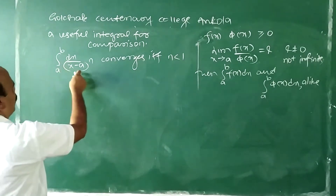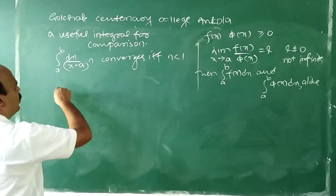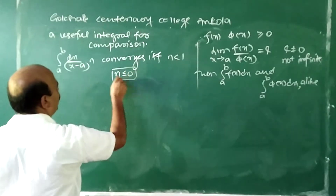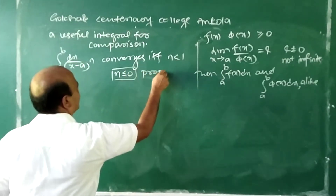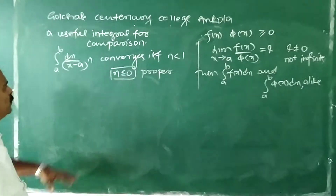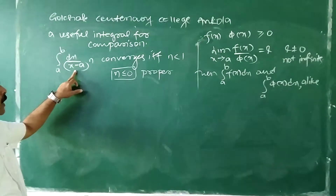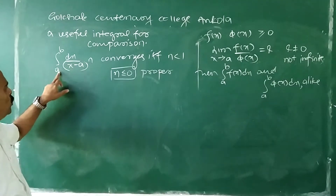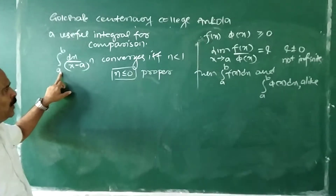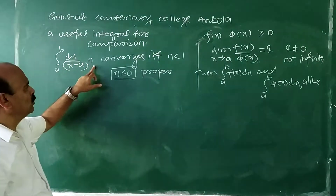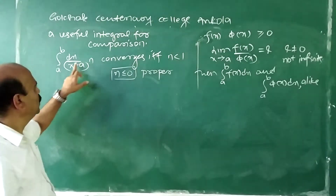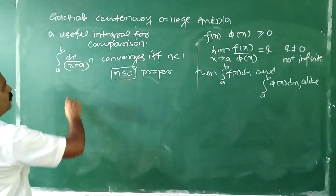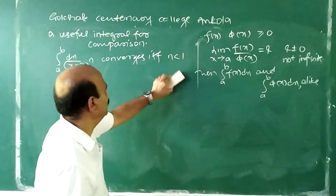Why is it improper? It is improper because when N is greater than 0, the function is unbounded at x = A. When N is less than or equal to 0, it becomes proper — because when N equals 0 the integrand becomes 1, and when N is negative it goes to the numerator, so A is not a point of discontinuity. When N is positive and greater than 0, A becomes the point of discontinuity.